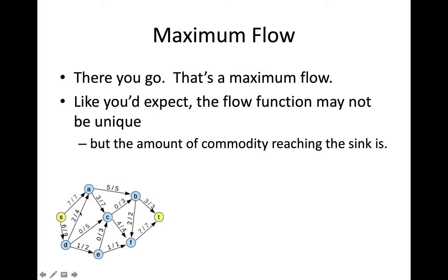In the graph at the bottom, this is an example of a maximum flow. Like a lot of optimization problems, the total flow you can get from source to sink — the amount of commodity you can get there — is unique. But the particular flow across each edge may not be. There may be multiple different ways of attaining that maximum flow, but the total amount of commodity is uniquely defined.